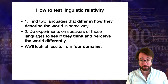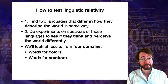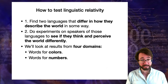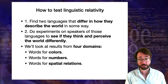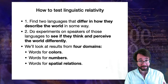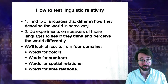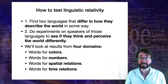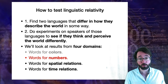We're going to look at results from three new domains today. We already looked at words for colors last time. Now we're going to look at words for numbers across languages and whether that affects how people think about quantities and numerosities. We're also going to look at words for spatial relations — how you describe how objects are arrayed in space — and words for time relations, how different languages describe the flow of time.